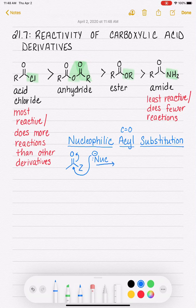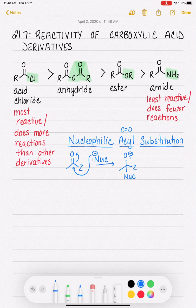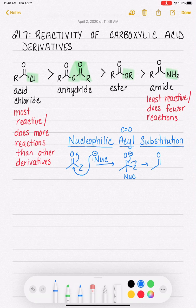This is probably looking pretty familiar to you. We have added the nucleophile to the carbonyl carbon, with a negative charge on the oxygen. Then that lone pair of electrons and negative charge on the oxygen come down to reform the carbon-oxygen double bond and spit off Z as a leaving group.